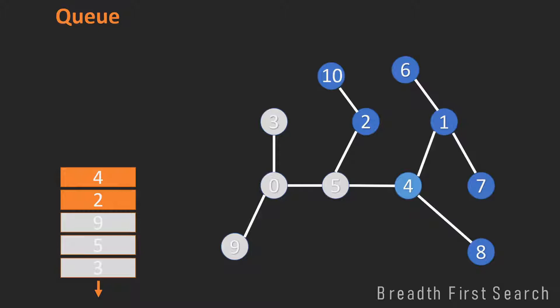And we have 2 in the front of the queue. So we visit node 2, look at all unvisited neighbors of the 2, in this case only the 10, and add the 10 to the queue. We mark 2 as visited and remove it from the queue.